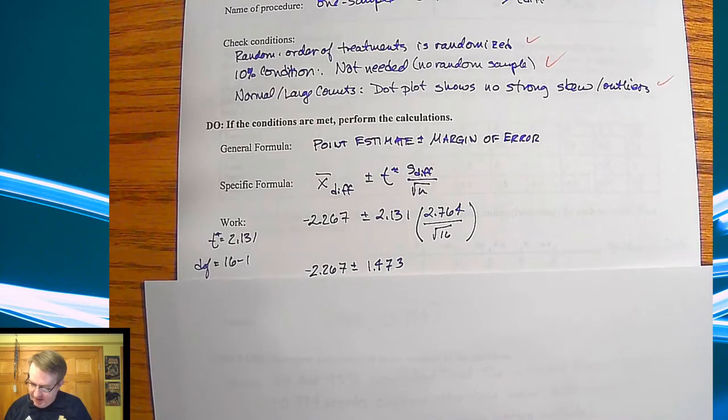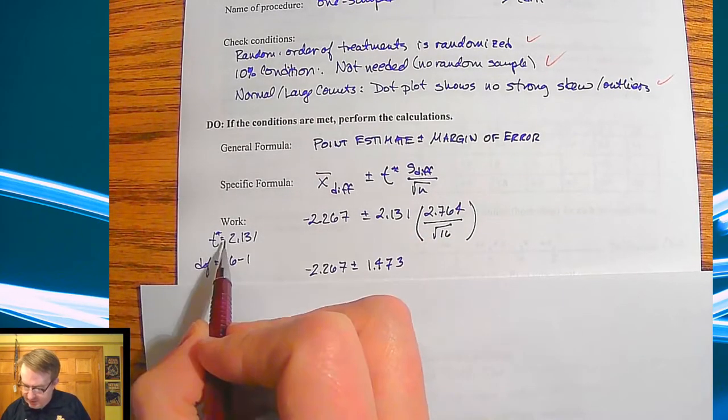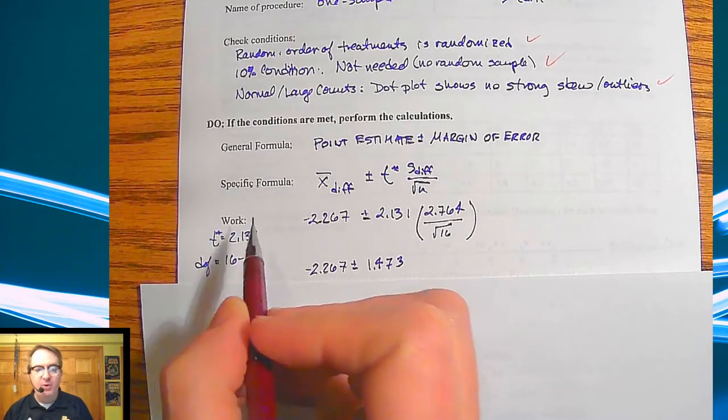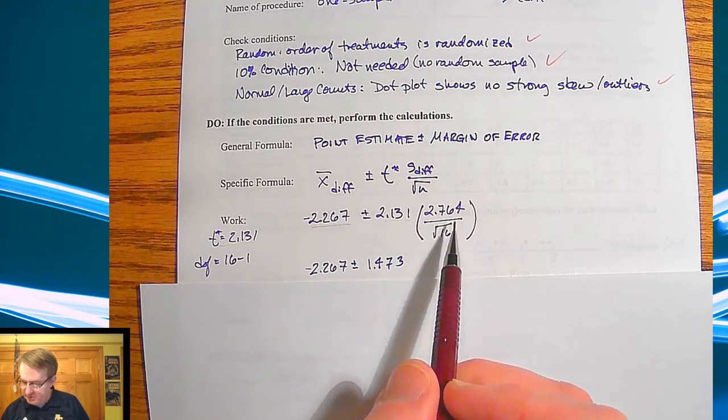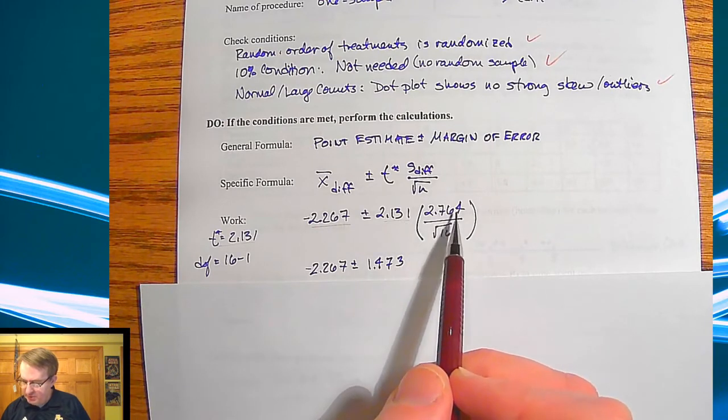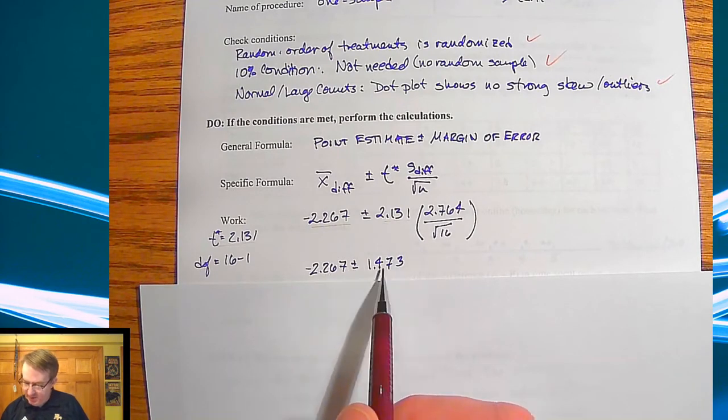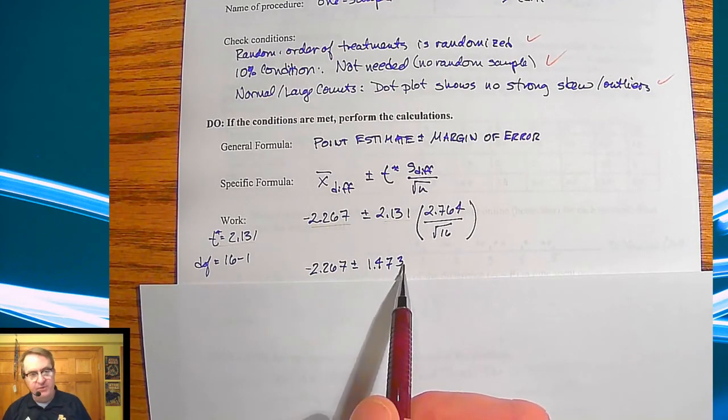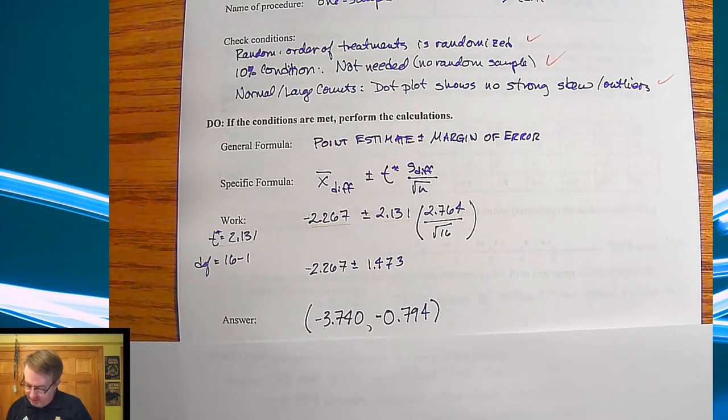My work is here. I have a degree of freedom of 15. So that gives me a t score of 2.131. So I've got my mean, I've got my t score here. And then over here, I've got the 2.764 divided by square root of 16. And so that gives me a margin of error of 1.473. So I'm going to take my mean and add and subtract that, which gives me a confidence interval of anywhere from negative 3.7 up to about negative 0.8.